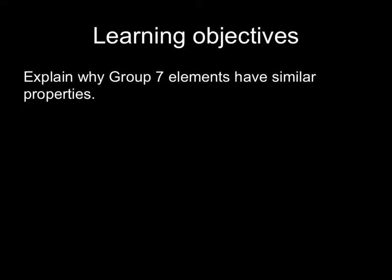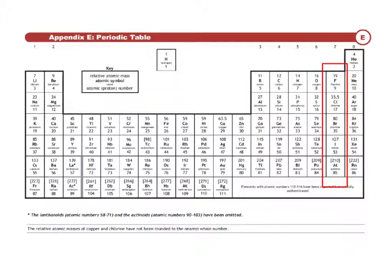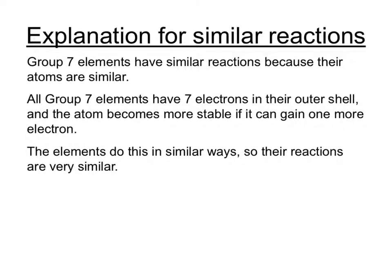We need to explain why group 7 elements have similar properties. Elements are placed in the same vertical group of the periodic table because they have similar atoms. Each of these will have 7 outer electrons. Because they each have 7 electrons, they will all react in order to gain 1 electron to become more stable, and they'll all do this in similar ways — so the elements all have similar reactions.